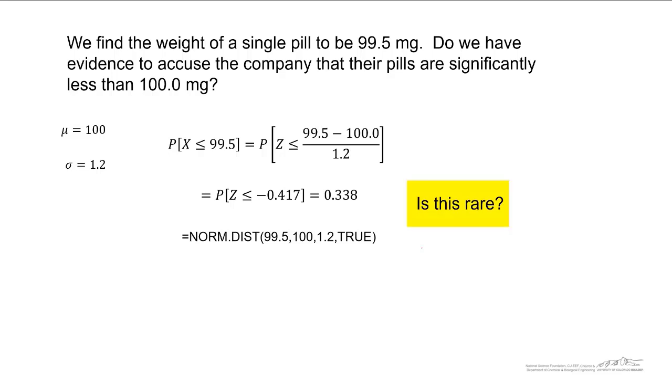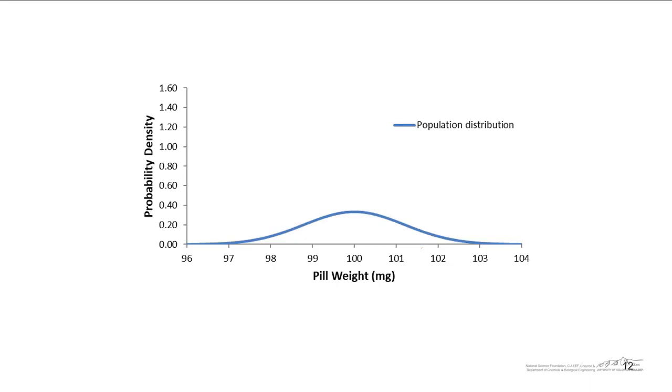And in fact, this is not rare. 33 percent of the time, we would expect to find pills that are less than or equal to 99.5 milligrams in mass. In other words, if we looked at this graphically, the probability that our pill weight is less than or equal to 99.5 would be about 0.338. So that happens almost 34 percent of the time.